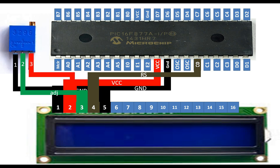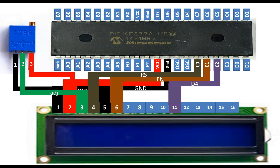Pin number 6 is the Enable pin. Connect it to any available digital I/O pin — I am using C1, which is pin number 16. That is my enable pin. Pins 7, 8, 9, and 10 — ignore them. Go to pin number 11, which is data pin D4. Connect it to any available digital I/O pin; I am using C2, which is pin number 17 of the PIC.